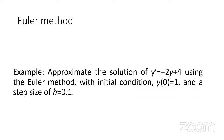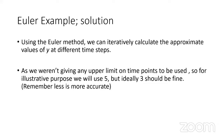Now a proper example of Euler's method: approximate the solution of y' = -2y + 4, where y' (Lagrange notation) is the same as dy/dx. Using the initial condition y = 1 when x = 0, and step size H = 0.1, we can calculate approximate values of y at different time steps. I choose to use five steps; remember, fewer steps means more accuracy.